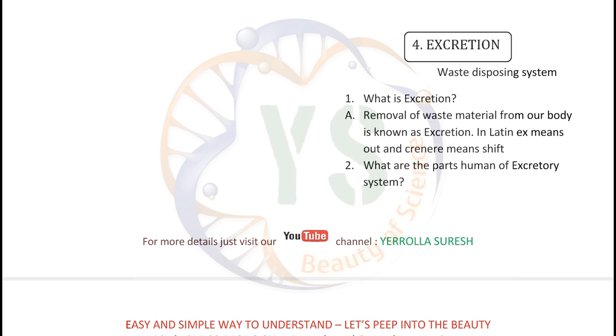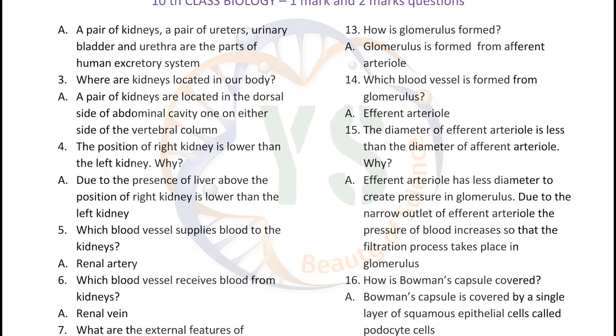What are the parts of the human excretory system? A pair of kidneys, a pair of ureters, urinary bladder, and urethra are the parts of the human excretory system.